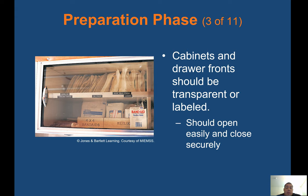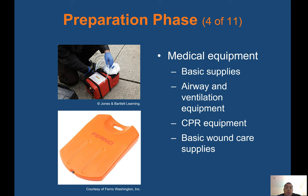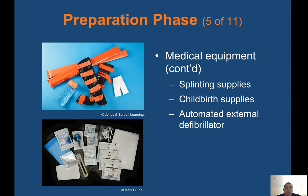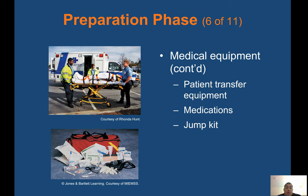Cabinets and drawer fronts should be transparent or labeled, opening easily and closing securely. Medical equipment includes basic supplies, airway and ventilation equipment, CPR equipment, basic wound care supplies, a suction unit, splinting supplies, childbirth supplies, and AED. You also have patient transfer equipment, medications, and a jump kit. The jump kit is a bag you bring to every call — everything inside your ambulance fits in it.